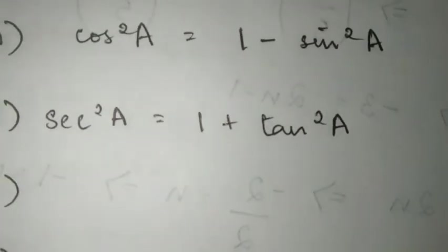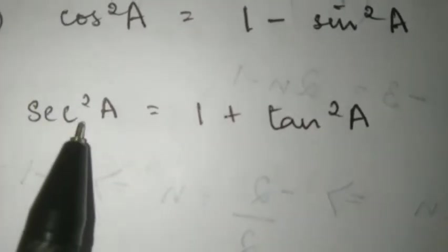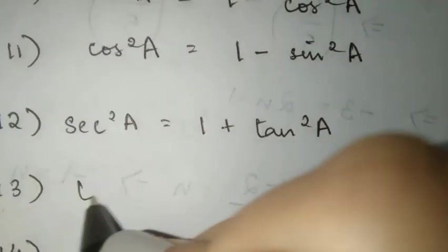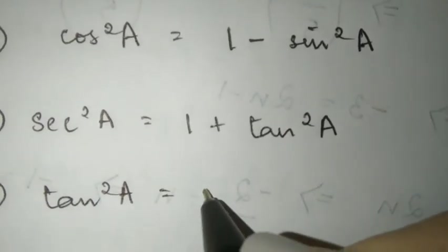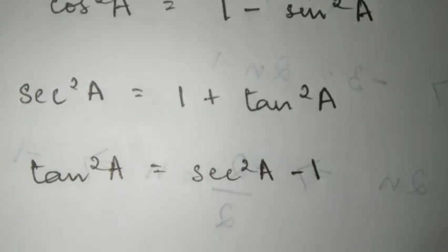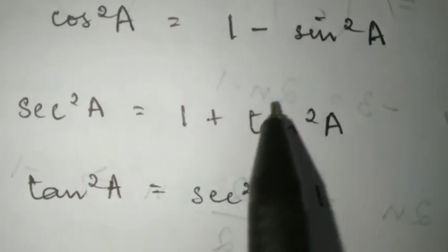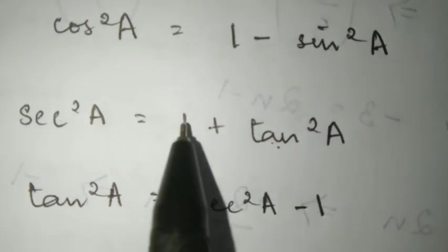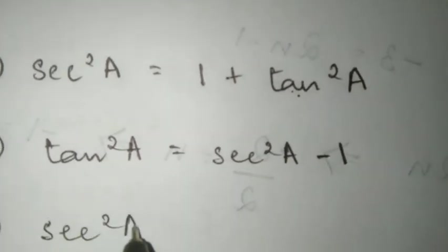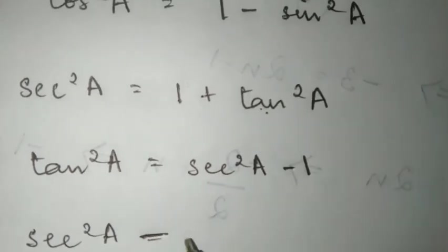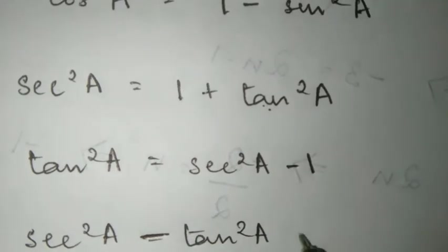Next we have sec square A equals one plus tan square A. If you want only tan square A, shift one to the left side: tan square A equals sec square A minus one. We can also rearrange: sec square A minus tan square A equals one.